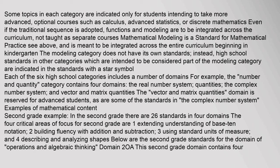Each of the six high school categories includes a number of domains. For example, the Number and Quantity category contains four domains: the real number system, quantities, the complex number system, and vector and matrix quantities. The vector and matrix quantities domain is reserved for advanced students. Examples of Mathematical Content — Second Grade Example: In second grade there are 26 standards in four domains. The four critical areas of focus for second grade are: (1) extending understanding of base-10 notation, (2) building fluency with addition and subtraction, (3) using standard units of measure, and (4) describing and analyzing shapes.